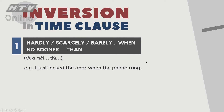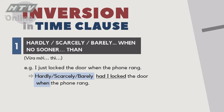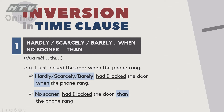Chúng ta chuyển câu sang đảo ngữ: 'Hardly / Scarcely / Barely had I locked the door when the phone rang.' Lưu ý: một trong ba chữ 'Hardly', 'Scarcely', 'Barely' đi với 'when'. Còn nếu dùng 'No sooner' thì: 'No sooner had I locked the door than the phone rang.' Nghĩa của chúng giống nhau.